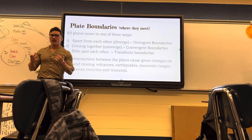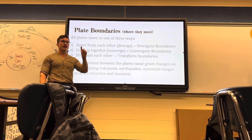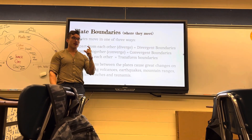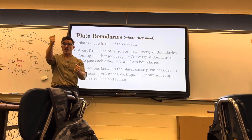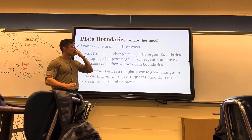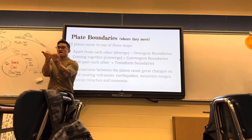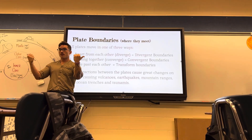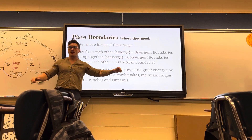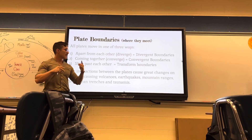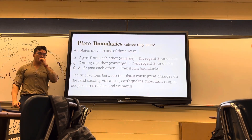A tectonic plate is a giant piece of crust - a piece of the lithosphere. All over Earth the lithosphere - the crust - has cracks in it, which are called boundaries. There are three types of plate boundaries: divergent boundaries, where plates go away from each other - those are the mid-ocean ridges where new baby rock is formed; convergent boundaries, where plates smash into each other; and transform boundaries, where they slide past each other. Each type is special and has something unique about it.